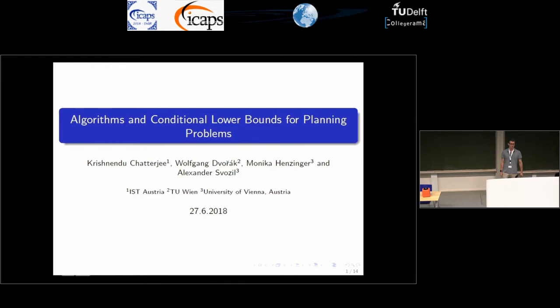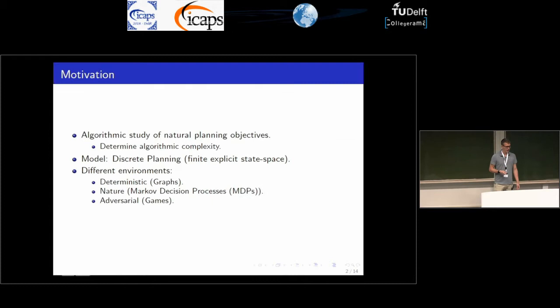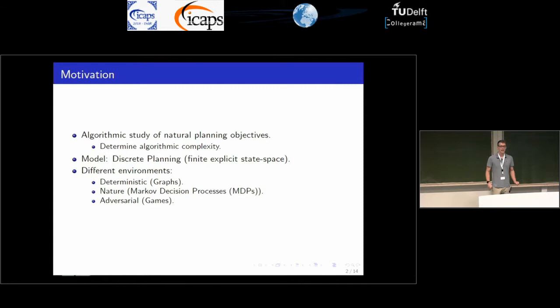This is joint work with Krishnendo Cetashi, Wolfgang Dvorak, and Monica Hensinger. Our motivation was to determine the algorithmic complexity of certain natural planning objectives.